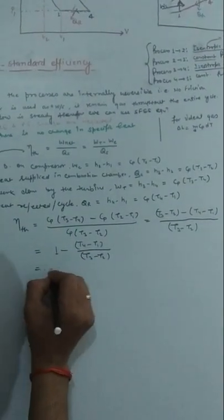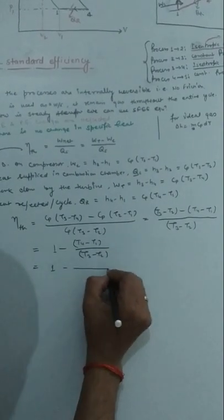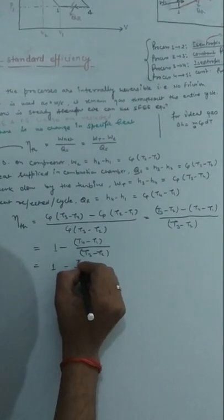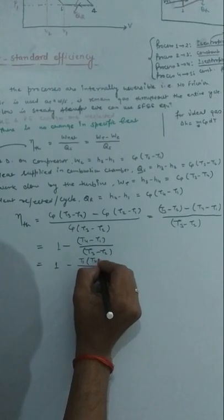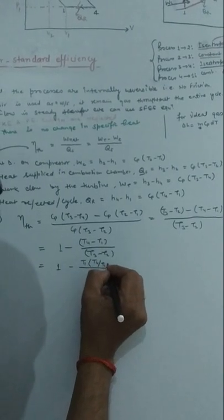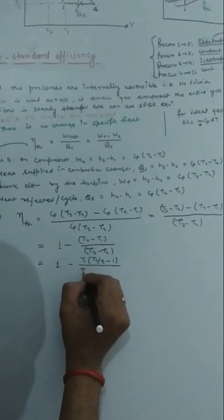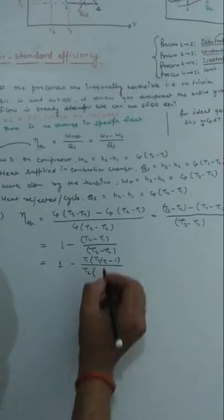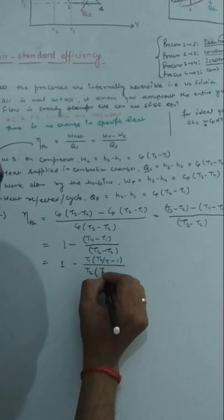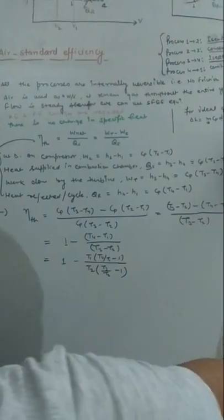This can be rewritten by taking T1 as common from the numerator and T2 as common from the denominator, giving η = 1 - T1(T4/T1 - 1) / T2(T3/T2 - 1). This is equation number 1.